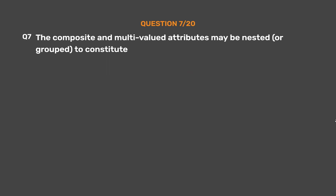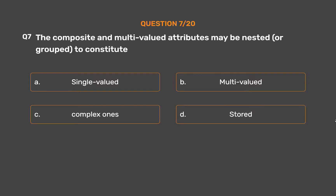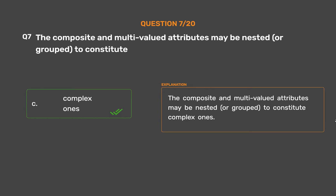Question number 7. The composite and multi-valued attributes may be nested, or grouped, to constitute: Option A: Single-valued. Option B: Multi-valued. Option C: Complex ones. Option D: Stored. The correct answer is Option C: Complex ones. The composite and multi-valued attributes may be nested, or grouped, to constitute complex ones.